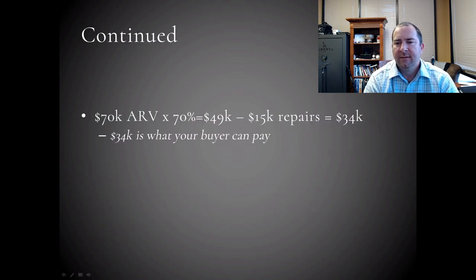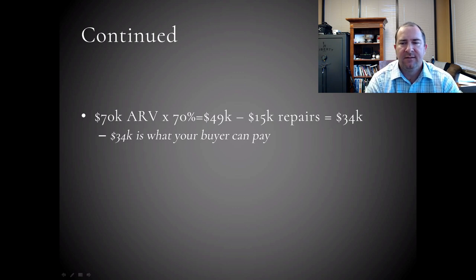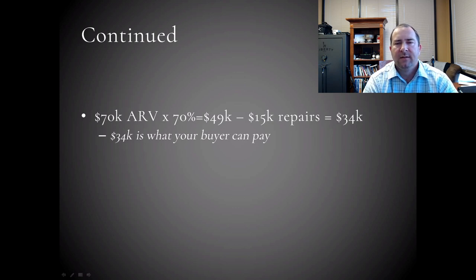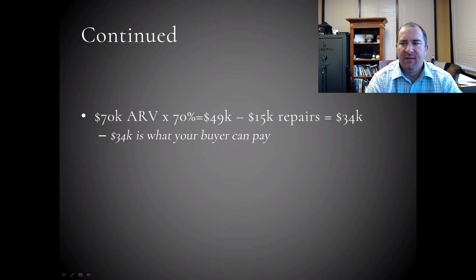In the Memphis market, it's not uncommon to see flippers and turnkey providers selling a house for $70,000. So with a $70,000 ARV, 70% of that gives you $49,000. Assuming a $15,000 repair, you're left with $34,000 — that represents what your cash buyer can buy this home from you for, so you need to get the property for less than $34,000. This is where it gets tough when wholesalers say they want a $10,000 minimum, because that means you'd need to lock it up for $24,000.